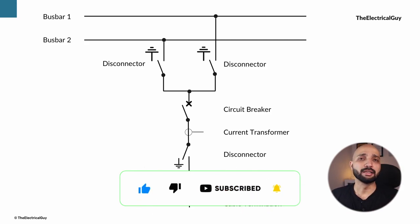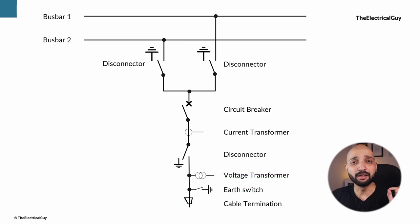So in conclusion, the single line diagram is a vital tool for designing, planning and troubleshooting electrical power systems. It provides a clear and concise overview of the system's configuration and its electrical and physical characteristics. So, I hope you have understood what is a single line diagram.